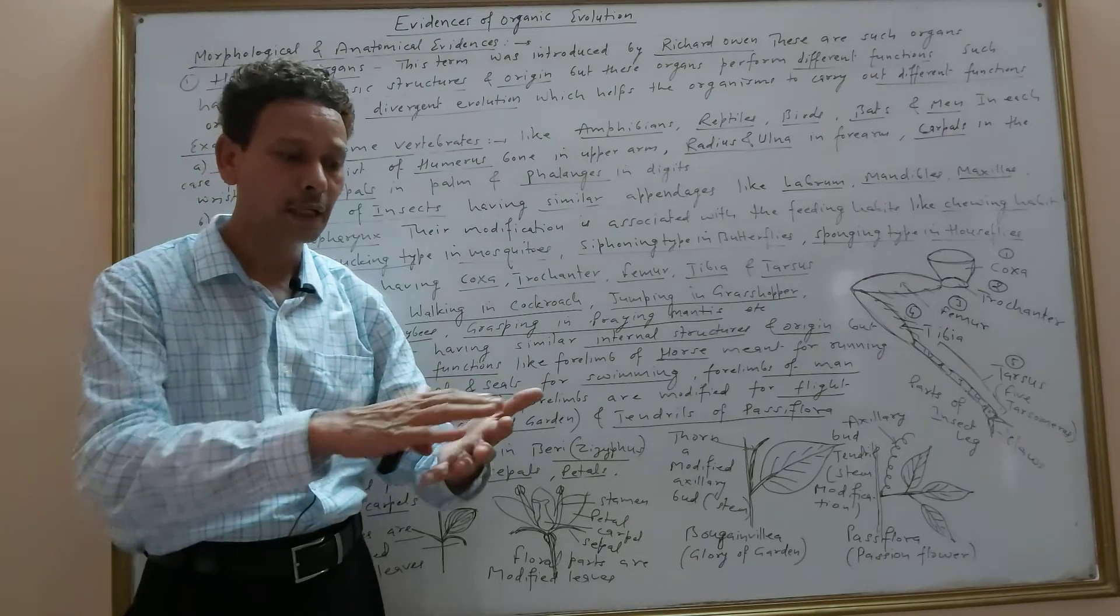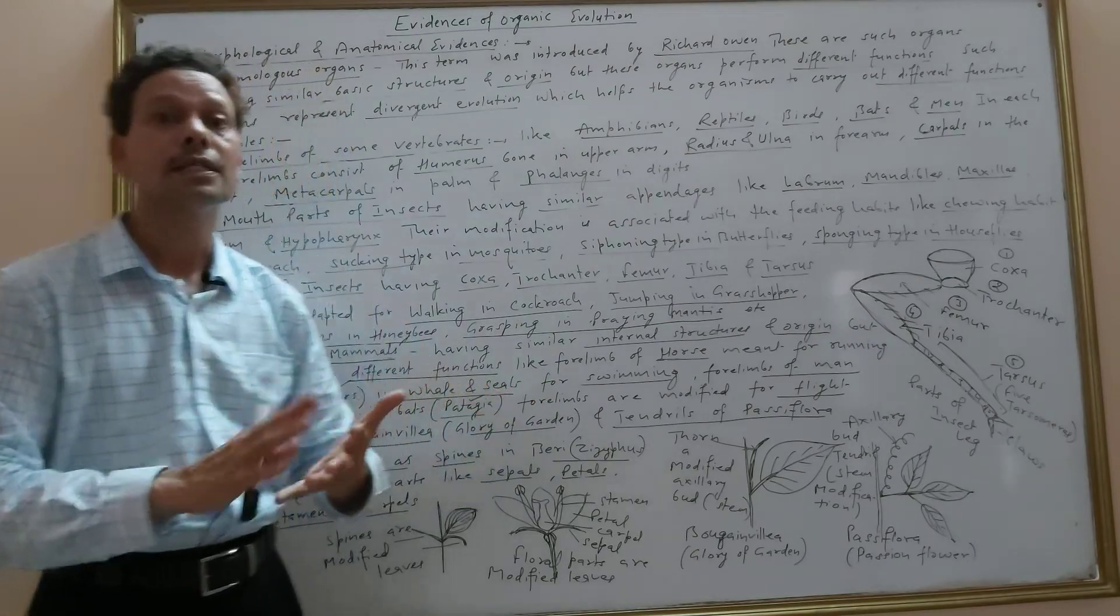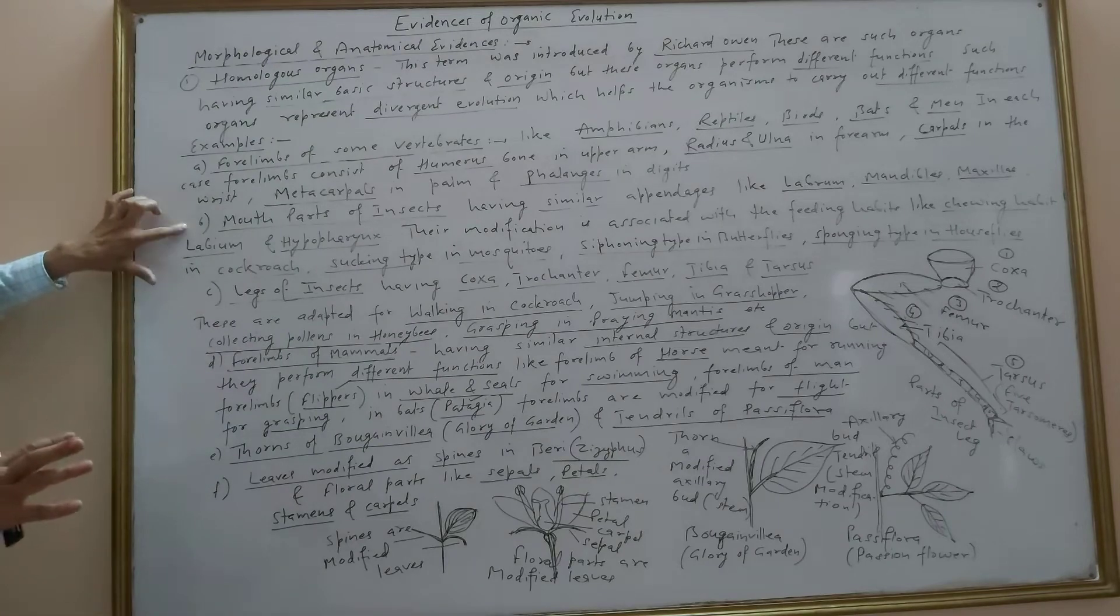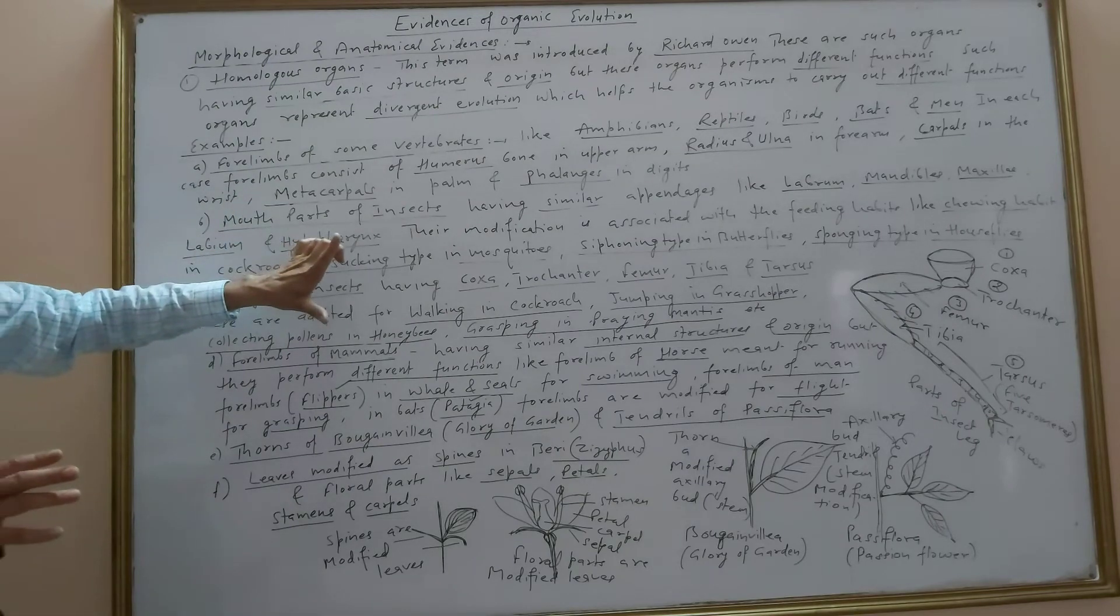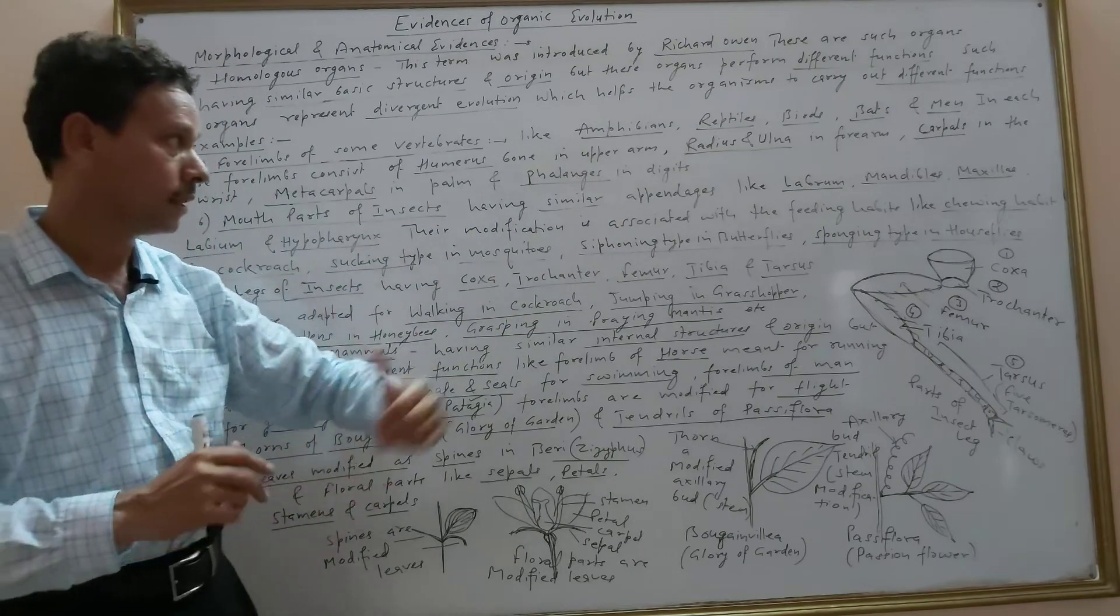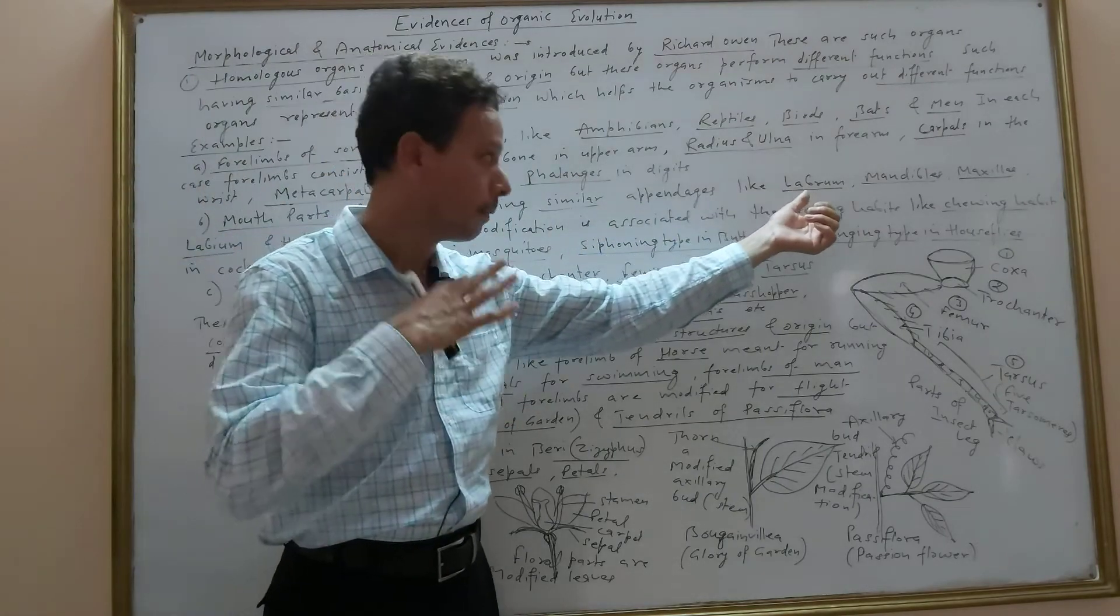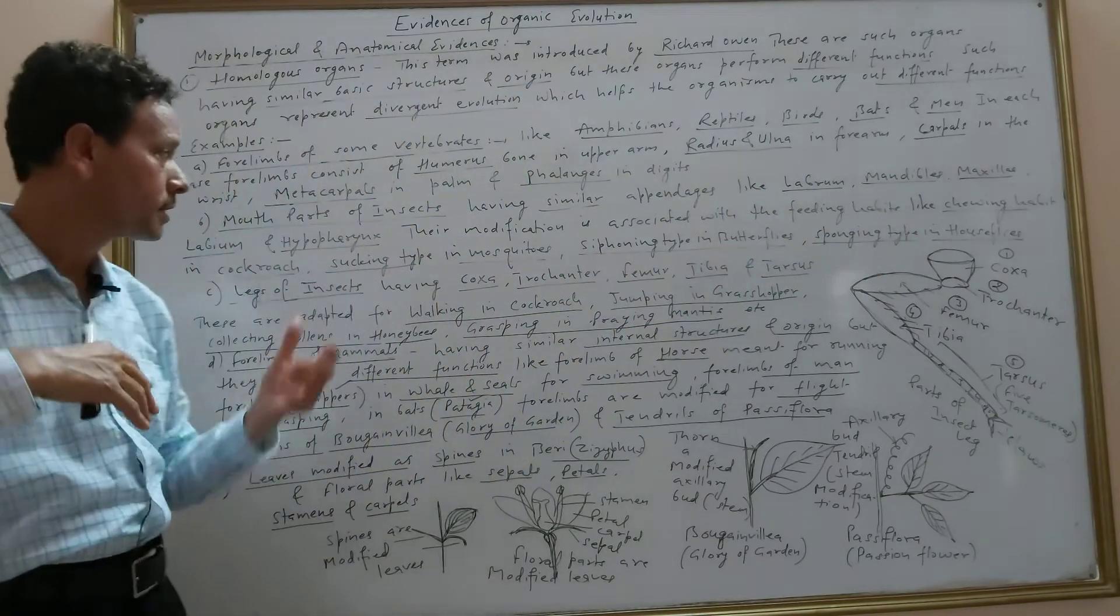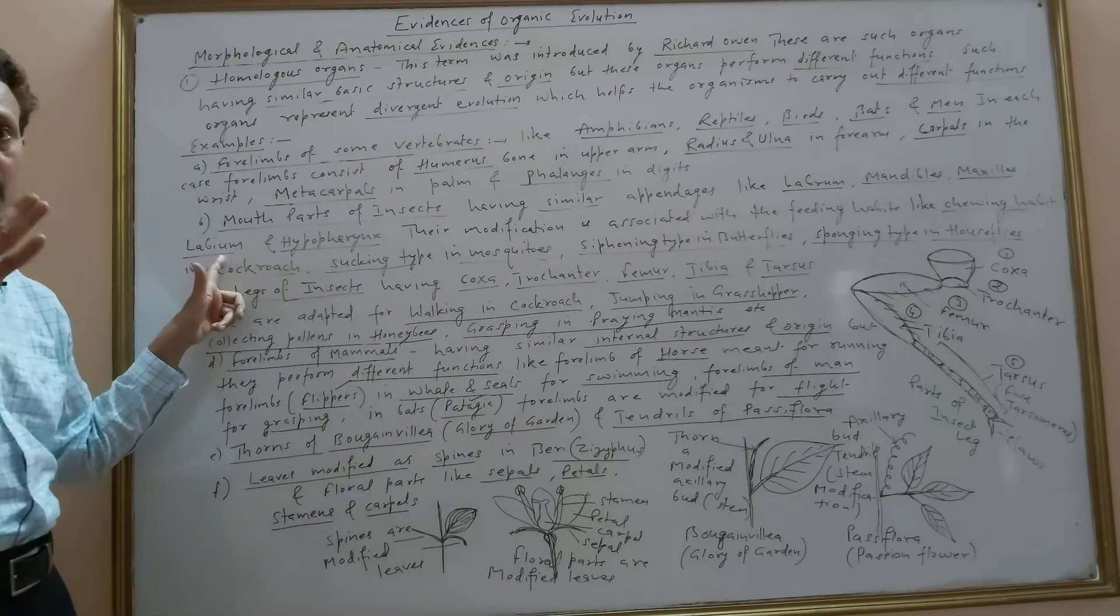Second example: mouth parts of insects having similar appendages like labrum (upper lip), mandibles, maxilla (jaws present in lateral side), labium (lower lip), and hypopharynx (tongue-like structure).